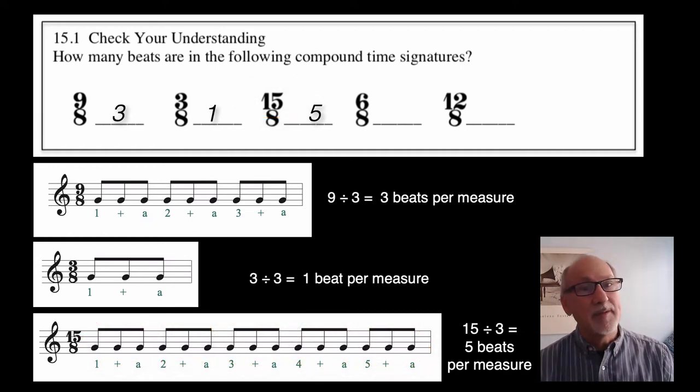Many compound time signatures have 8 as the bottom number, so it is relatively safe to assume that when the top number is divisible by 3, and the bottom number is an 8, the meter is compound.